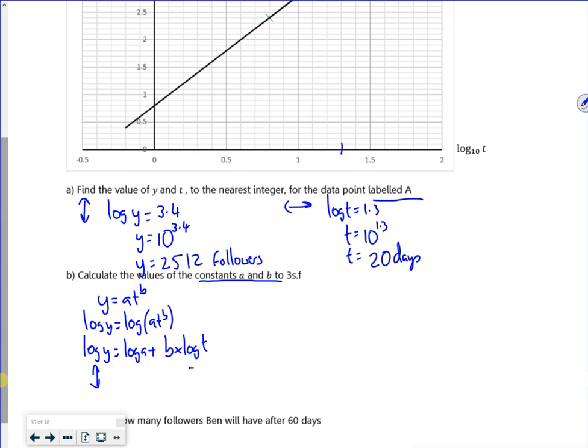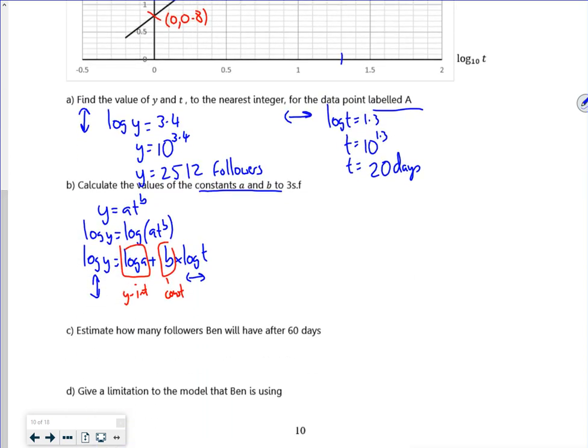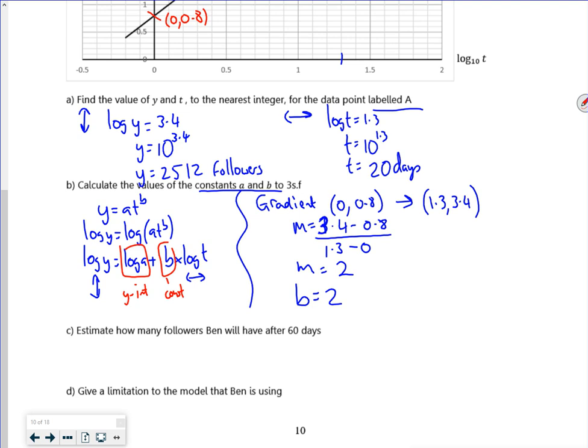We know from the graph that log y is up and log t's across. So that must be the y intercept and that must be the gradient. So I need two points. I've got 1.3, 3.4 and we should be able to read off 0 and 0.8. So I'm going to use that for my gradient. So my gradient is 0 and 0.8 through to 1.3 and 3.4, gives me a gradient of 2. But my gradient is actually b, so b is 2. That's good, I've found a constant.